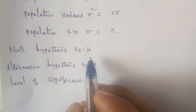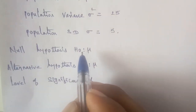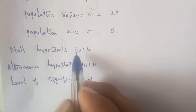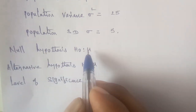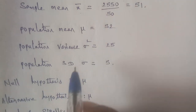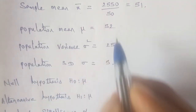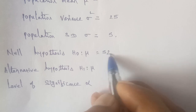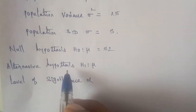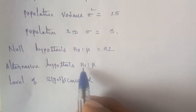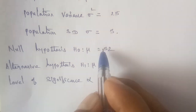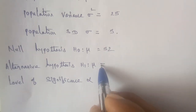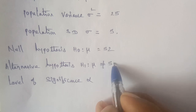The null hypothesis H₀: μ = 52. The alternative hypothesis H₁: μ ≠ 52. Since the alternative uses 'not equal to', this is a two-tailed test.